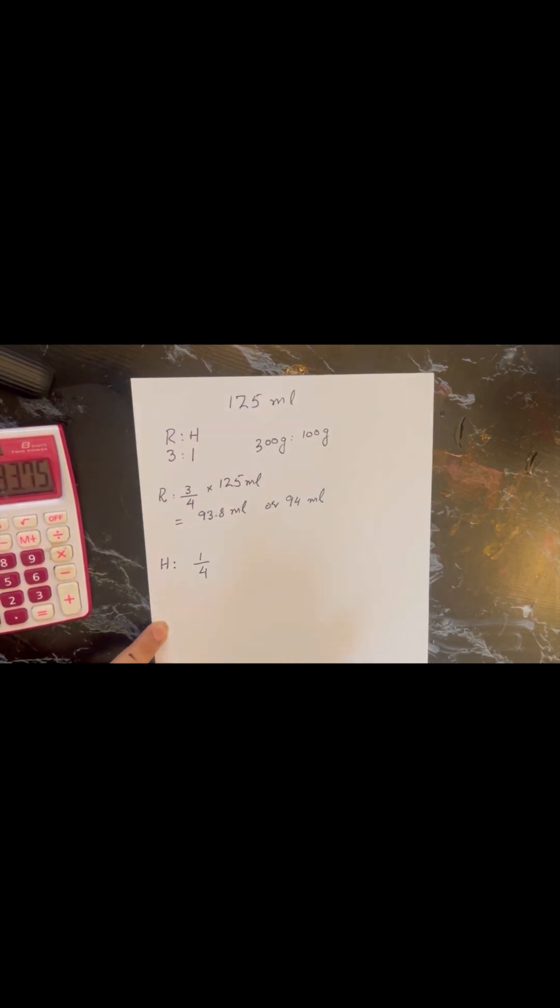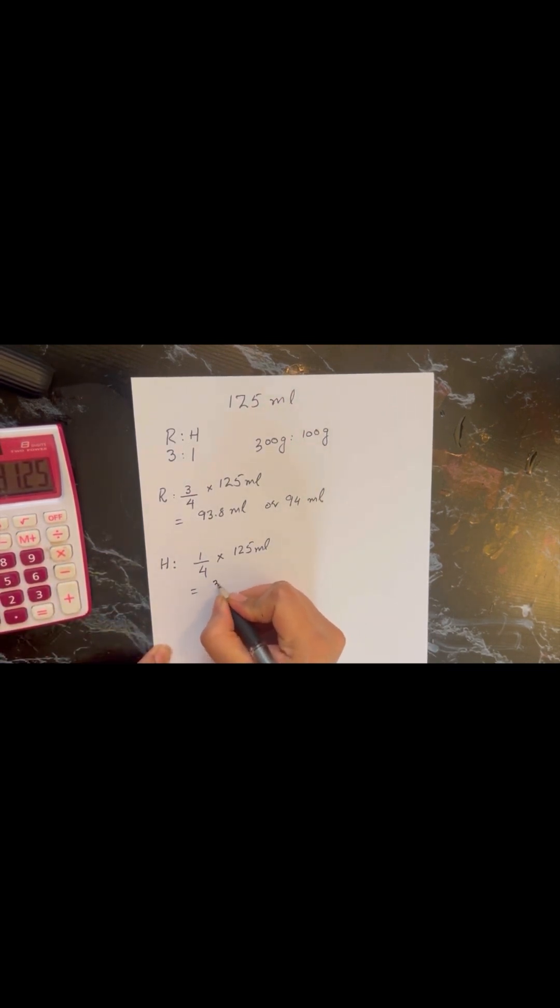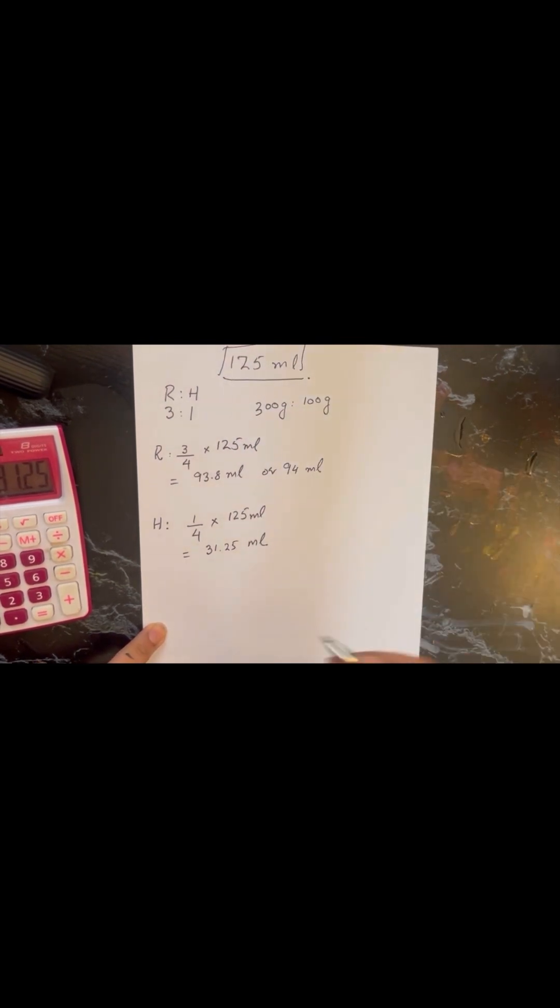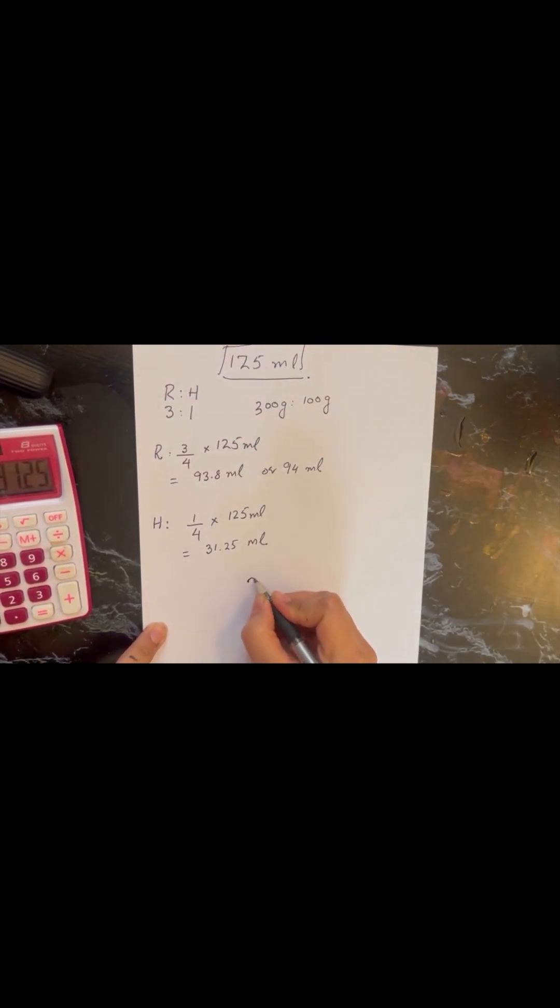So out of 125 ml, 94 ml is going to be our resin. And now I'm going to show you how you can calculate your hardener: 1 by 4 times 125. Since hardener is one portion out of the four, 1 by 4 times 125, and the answer is 31.25 ml and you can round it down to 31 ml.